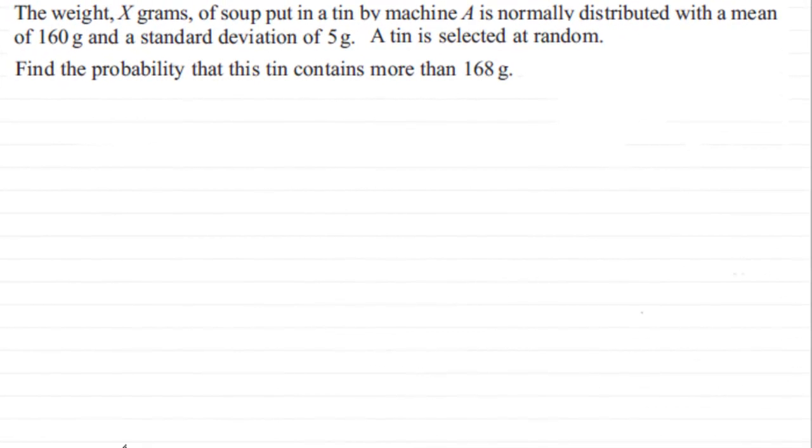Now in this example, just to recap, we've got the weight X grams of soup put in a tin by machine A is normally distributed with a mean of 160 grams and a standard deviation of 5 grams. And the tin is selected at random. And what we've got to do is find the probability that this tin contains more than 168 grams.